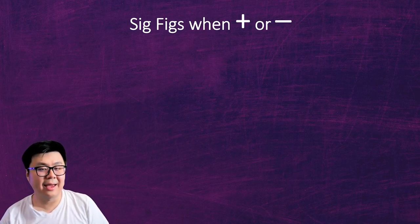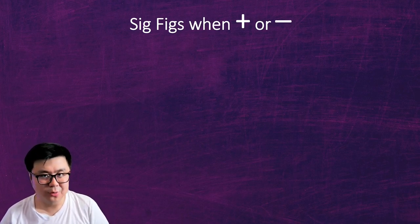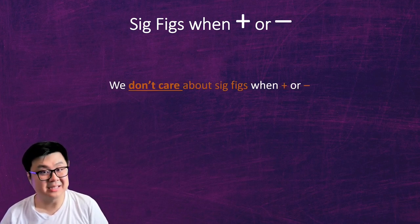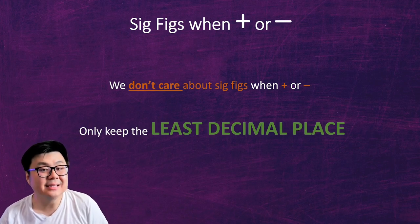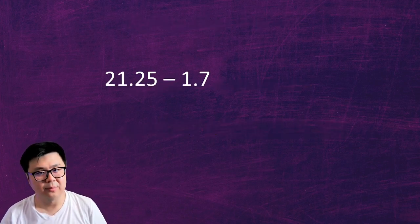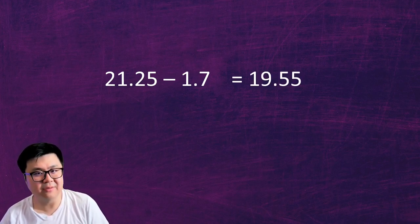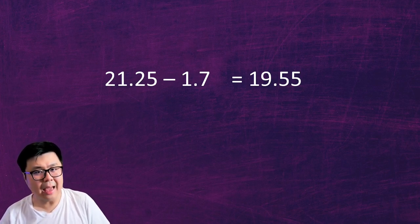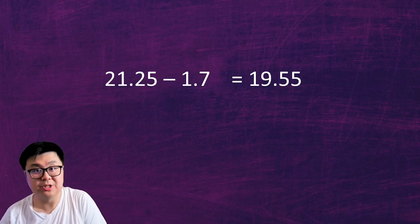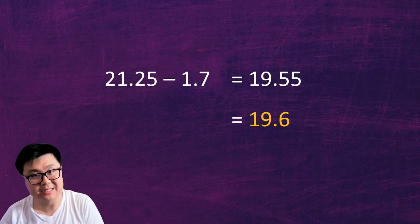Now that we know how to calculate sig figs, how do we use them in calculation questions? When we add or subtract, we don't look at sig figs at all. We just keep the lowest or least decimal place out of all the numbers we're adding or subtracting. For example, if we did 21.25 minus 1.7, the answer would be 19.55. But 21.25 has two decimal places and 1.7 has one, which means our final answer should have the least decimal place — one. So we have to round it to 19.6.